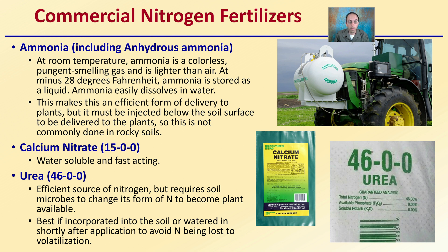Calcium nitrate (15-0-0) is a water-soluble and fast-acting form of nitrogen fertilizer. Urea is very potent at 46% nitrogen and is a very efficient source, but it requires soil microbes to change its nitrogen form to become plant-available. It's best if incorporated into the soil or watered in shortly after application to avoid nitrogen being lost to volatilization, where it becomes a gas and goes into the atmosphere rather than being taken up by the plant.